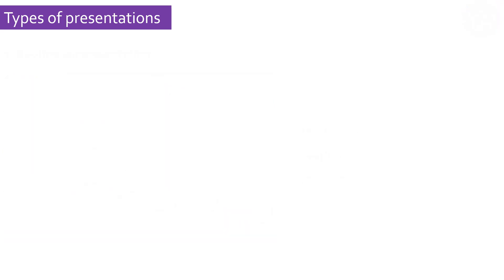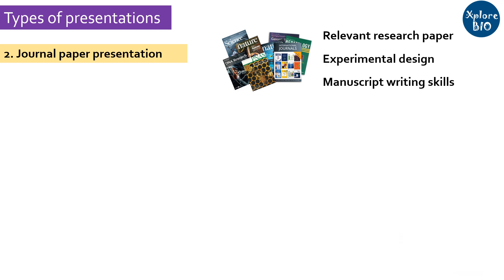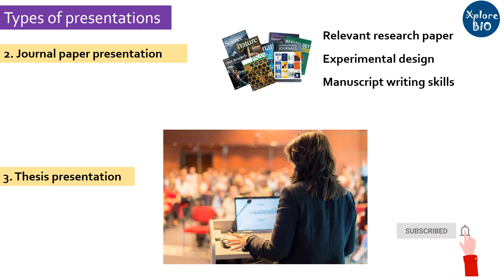A journal paper presentation. In such presentations, a researcher presents a published research paper which is usually relevant to their current work. Its purpose is to generally help the researcher understand how a research paper is written, how experiments are designed, executed and how the results are presented in a paper. A thesis presentation, which may be a synopsis or dissertation or viva. The presenter defends his or her research in front of others. If you want me to make a separate video on any of these presentation types, please mention in the comment below or email me.